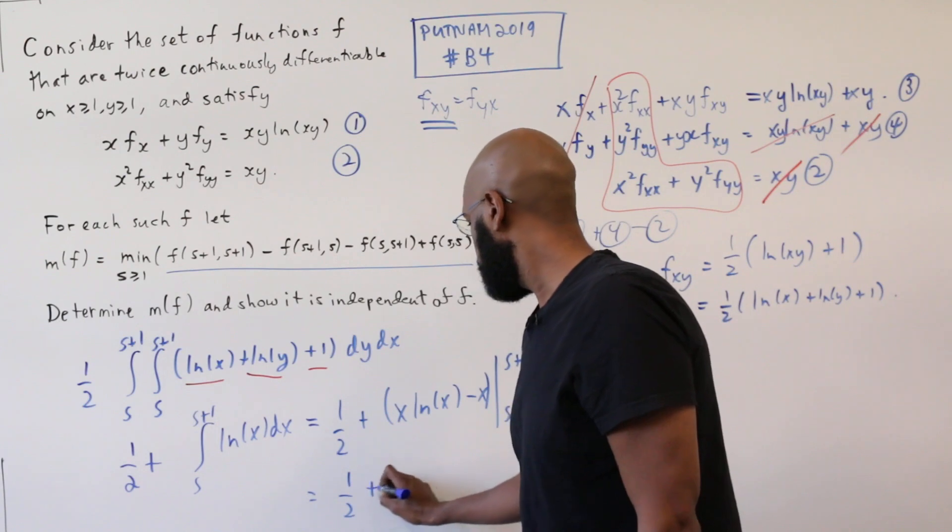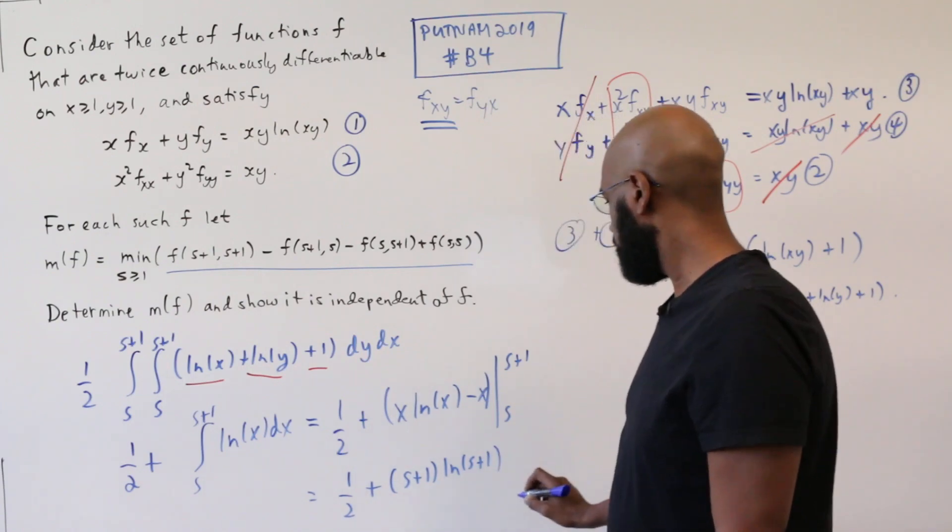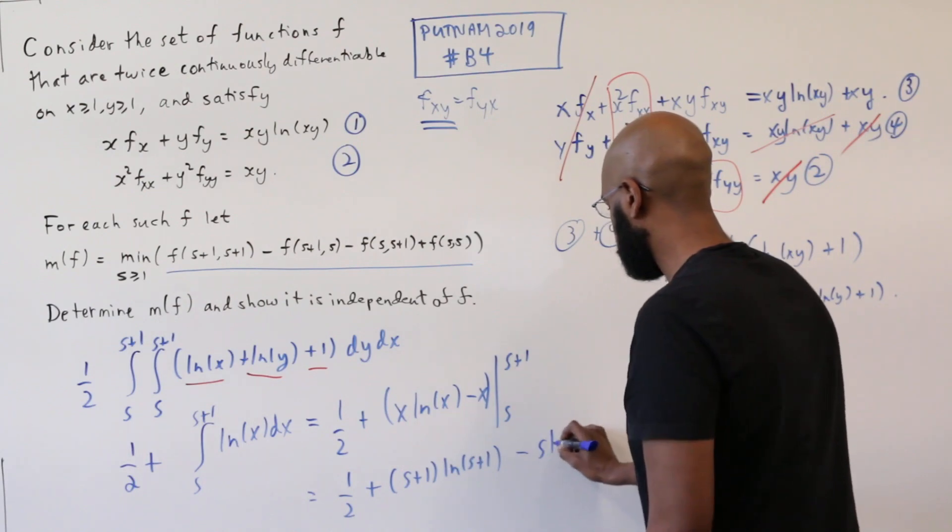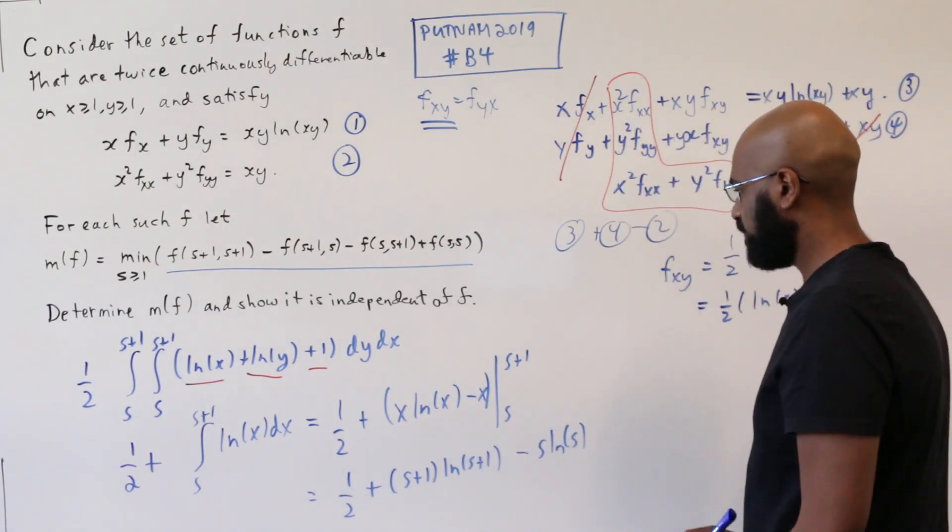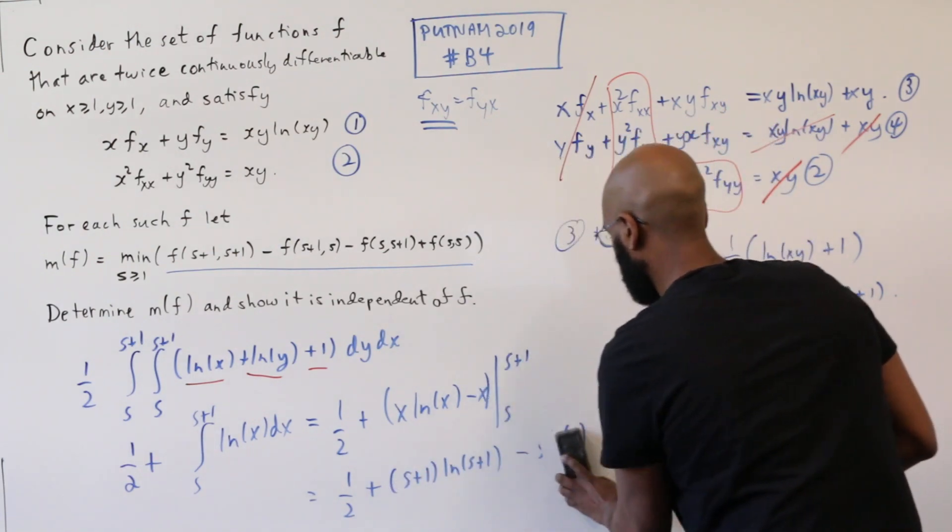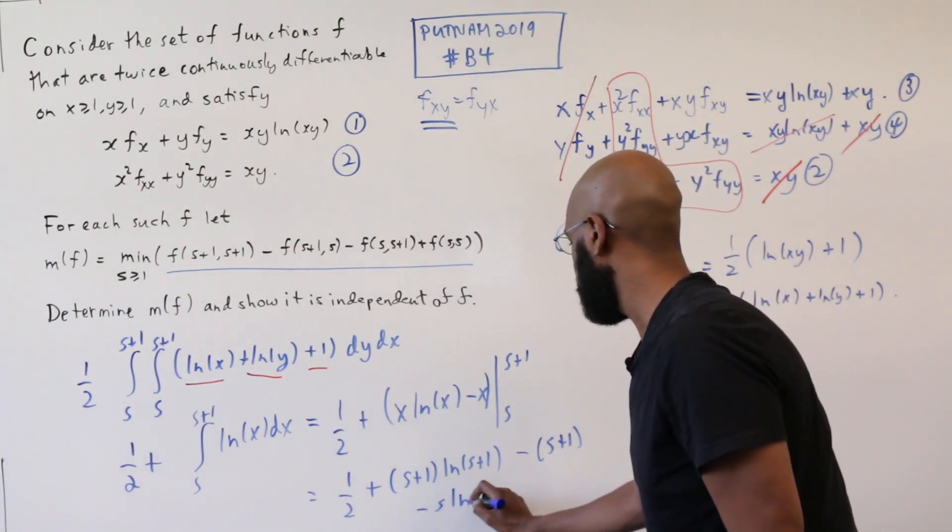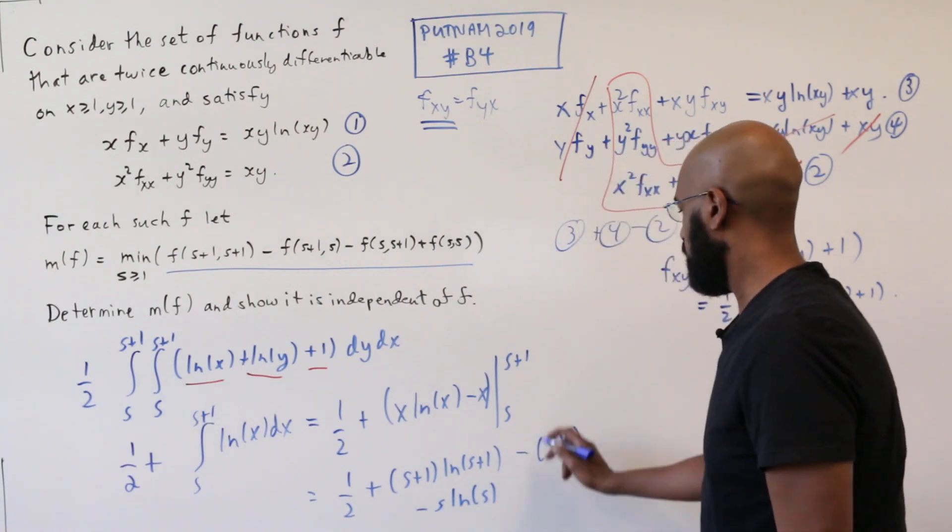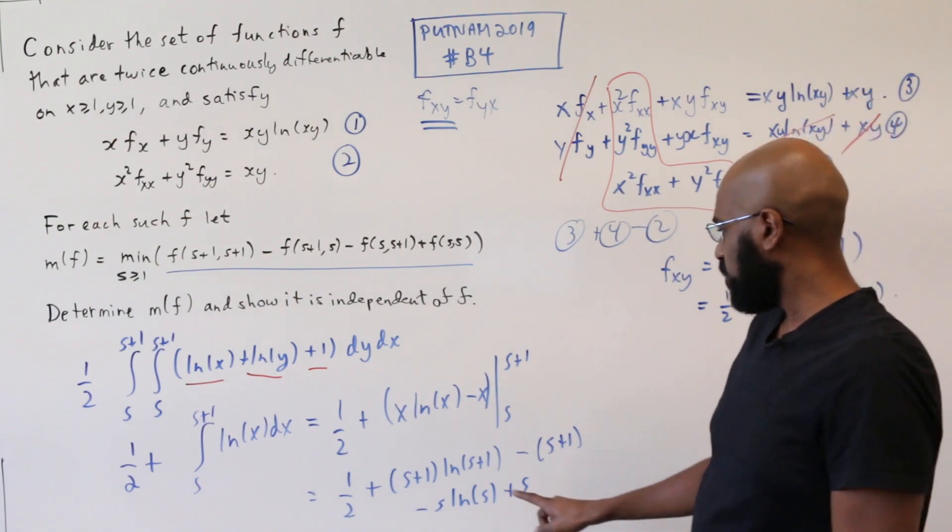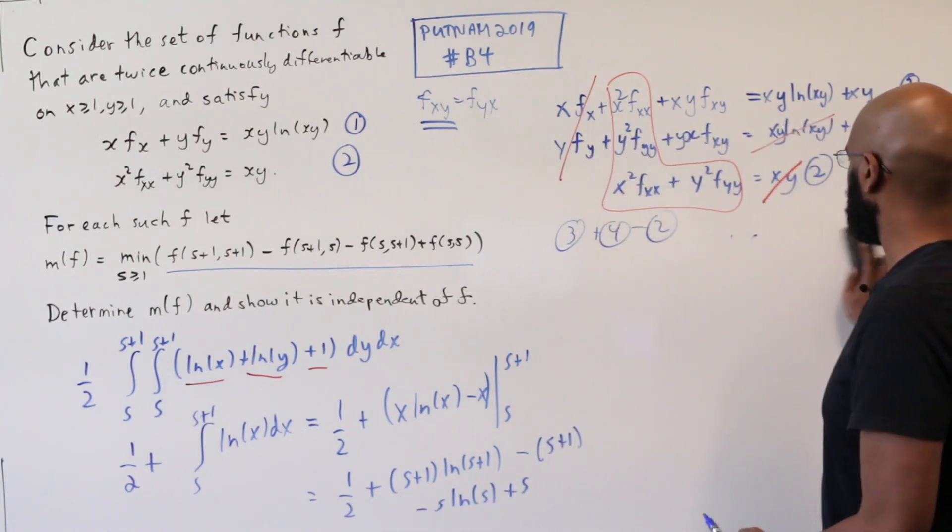And that's a half plus (s+1) ln of (s+1) minus (s+1). And then minus s ln s minus s. So if we put that all together, we get minus (s+1), and then minus s ln s minus s, which gives us a plus s. Okay, so we're left with this expression here, which I will rewrite. We don't need this partial anymore, so I'll get rid of it.